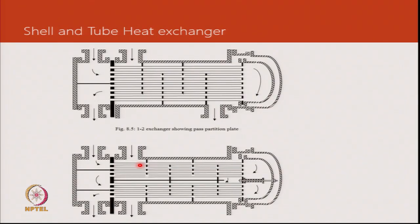In a shell and tube heat exchanger, one refrigerant or fluid enters and passes through a cross section of tubes and comes back through another bank of tubes, while the second fluid passes through baffles and exits the heat exchanger.